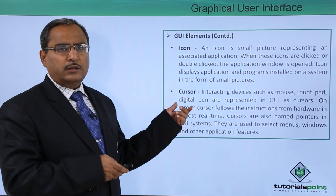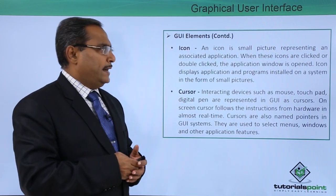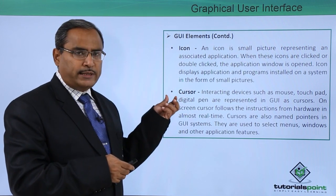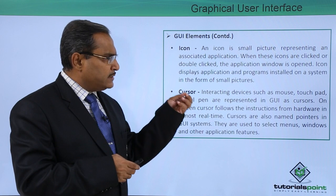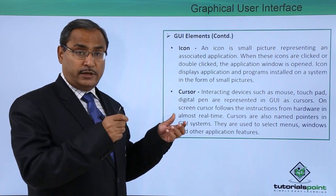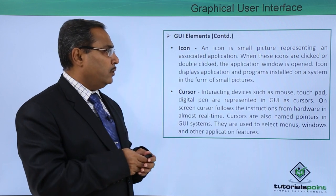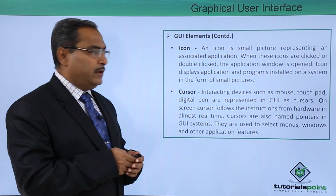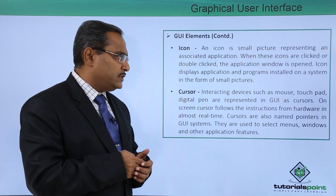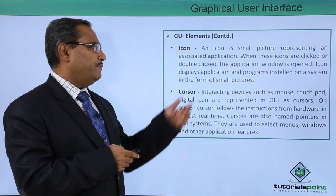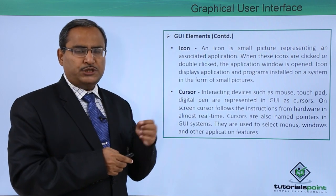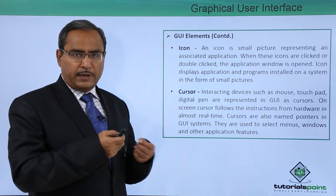Next, we are considering the icon. An icon is a small picture representing and associated with an application. When icons are clicked, double-clicked, or touched on a touch screen, the application window will be opened. Icons display applications and programs installed on a system in the form of small pictures, and may include a text label.